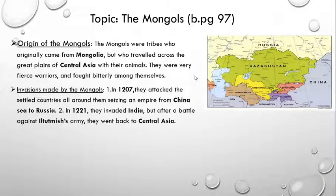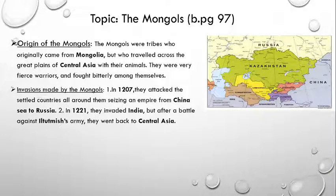The China Sea is a marginal sea that is part of the Pacific Ocean, which is one of the five largest oceans of the world. Now the second invasion made by the Mongols: in 1221, they invaded India, but after a battle against Il Thutmish's army, they went back to Central Asia. We discussed this invasion while studying about Il Thutmish. Genghis Khan gathered his army to fight against Il Thutmish as they wanted to conquer India, but in this battle neither side won, so the Mongols went back to Central Asia.